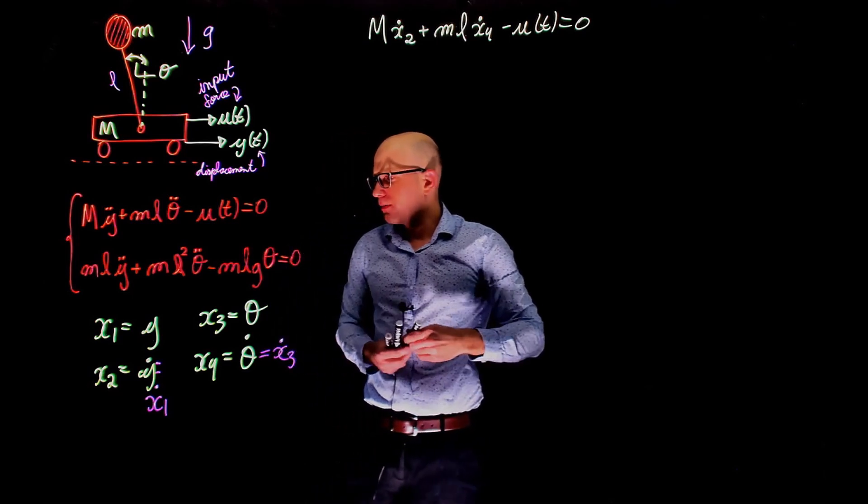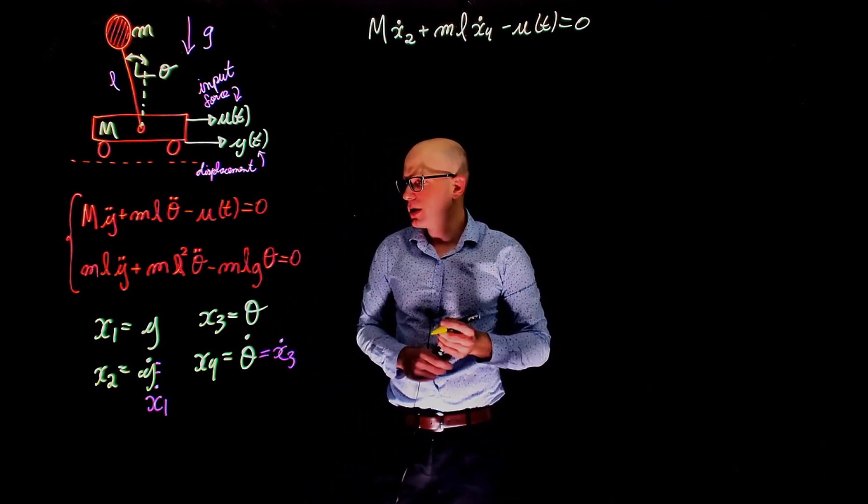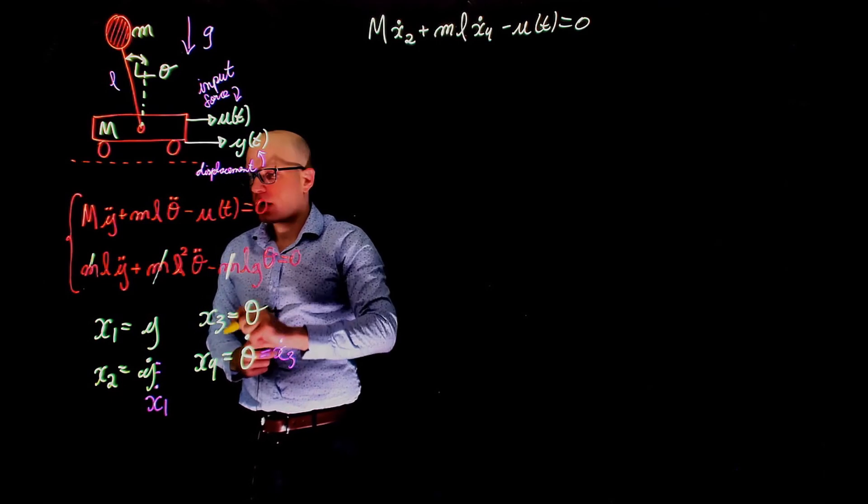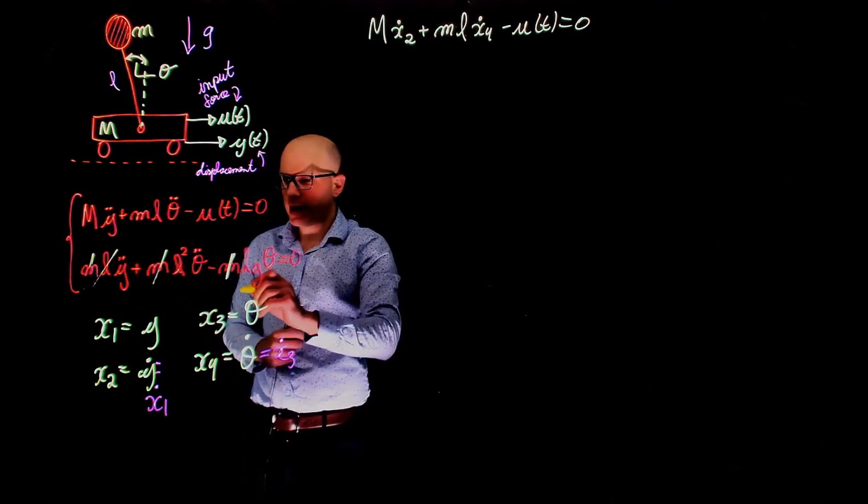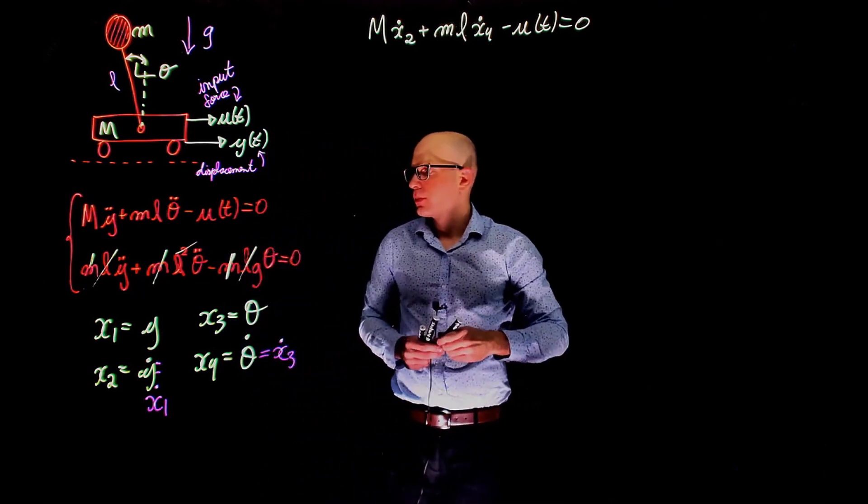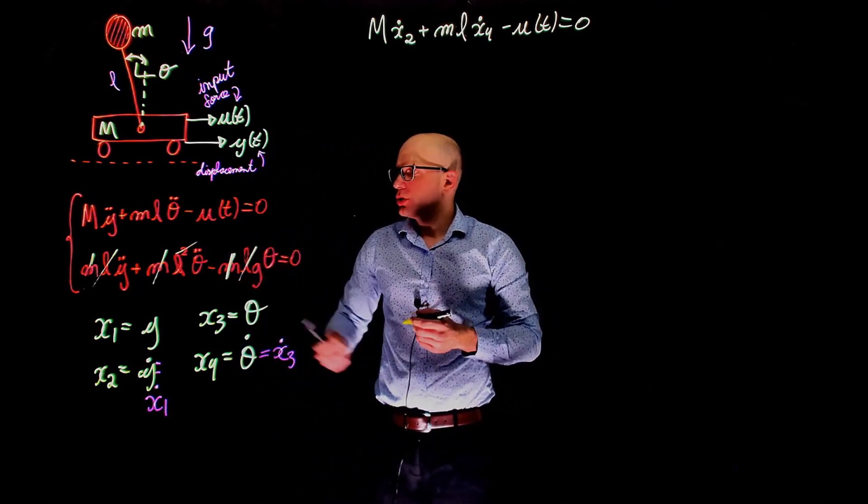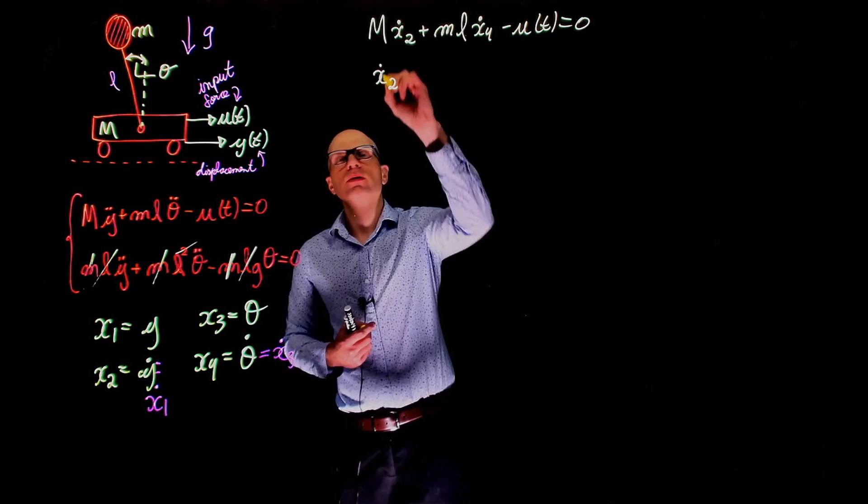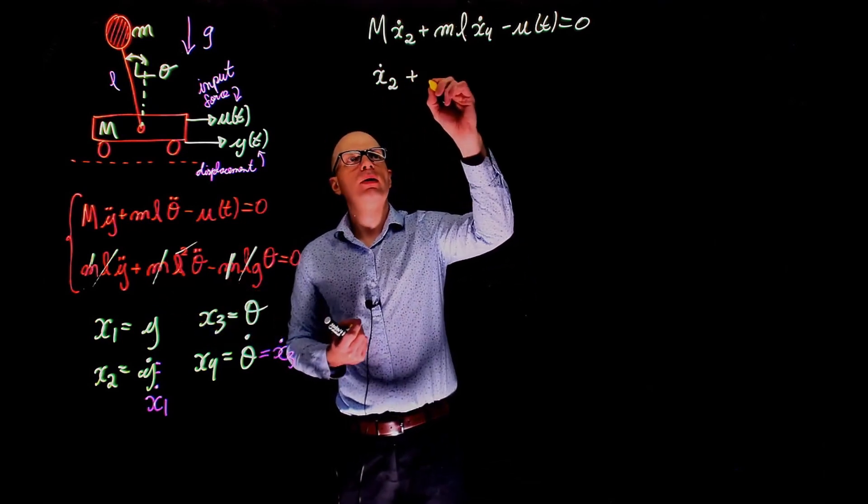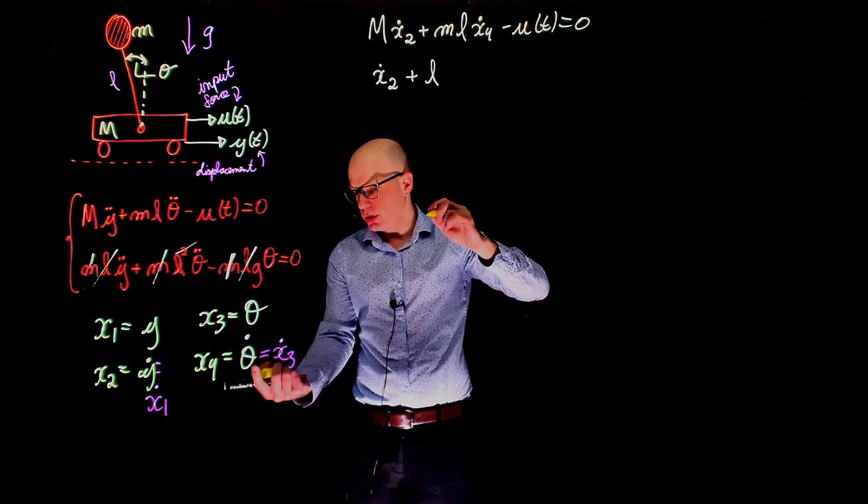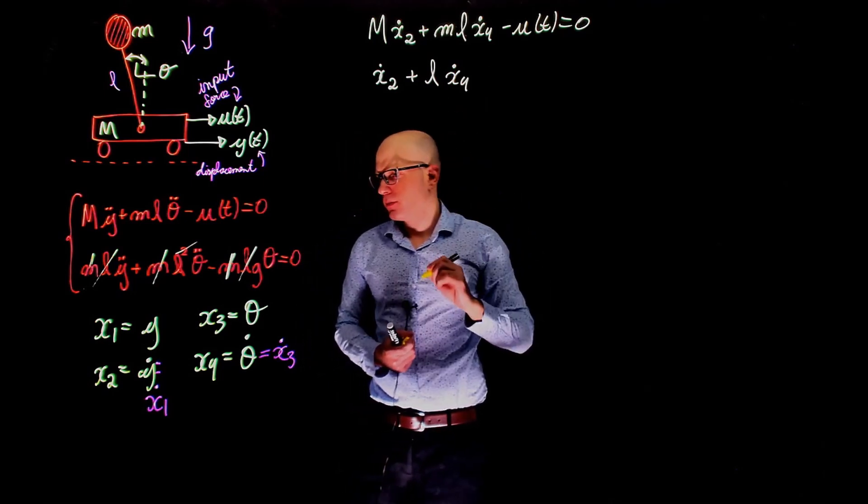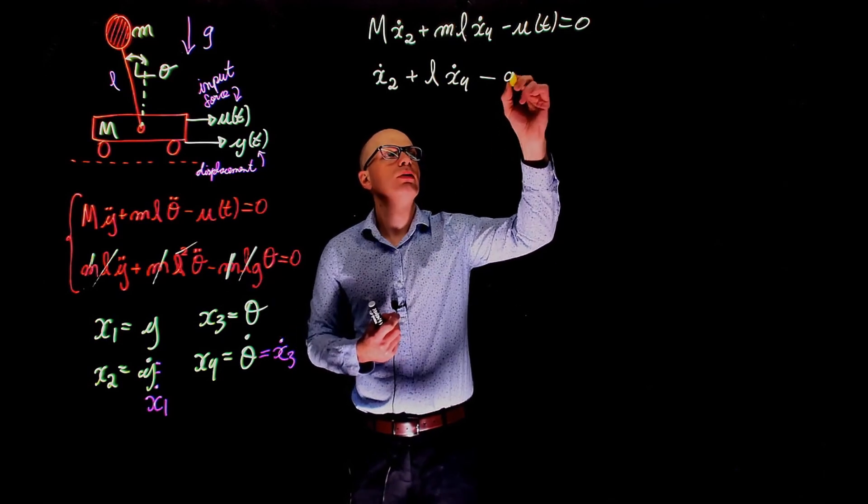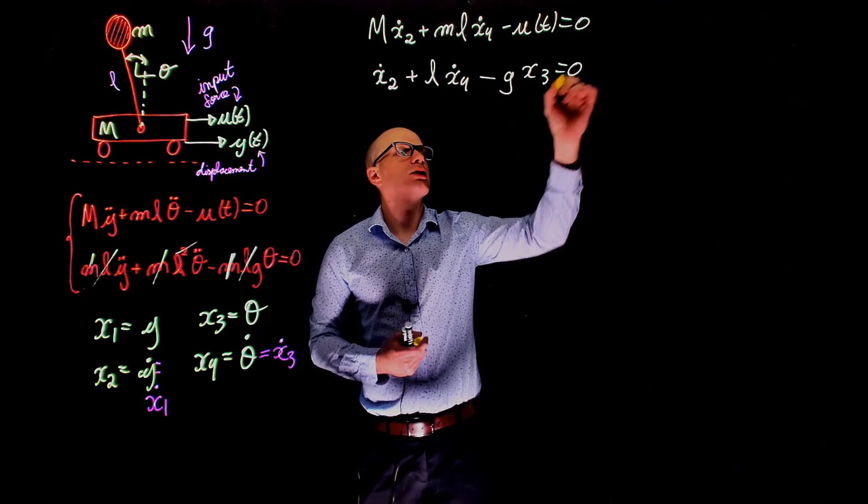And you can look at the second equation here, just by looking at the second equation, we can make some simplifications right away. We can simplify all these masses. And you can simplify the length l, this l and this power of two here. And now rewrite this equation using the state variables. What do we get? We get y double dot, that is x2 dot, plus l times theta double dot, which is x4 dot, minus g times theta, which is x3. And this is equal to zero.